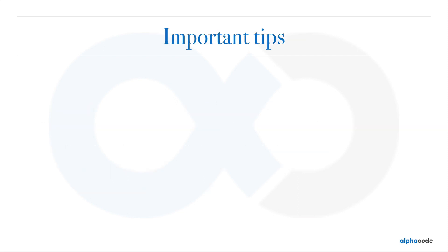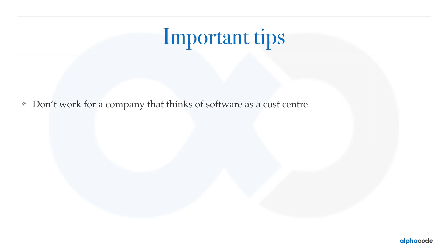There are some important tips I'd like to share. First, don't work for a company that thinks of software as a cost center. Companies who understand how software gives them a competitive edge are champions in their verticals — and that is perhaps why companies like Airbnb, Uber, and Netflix are winning in their verticals and have grown so big in such a short amount of time.